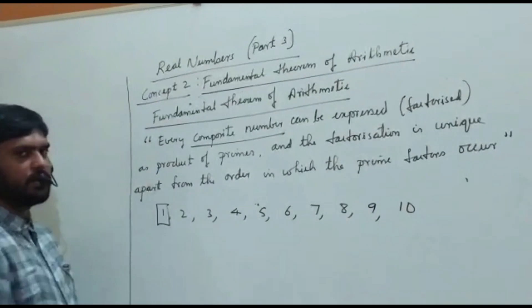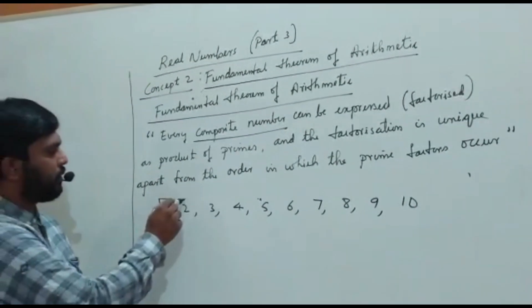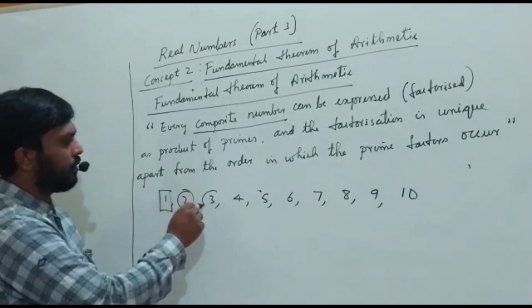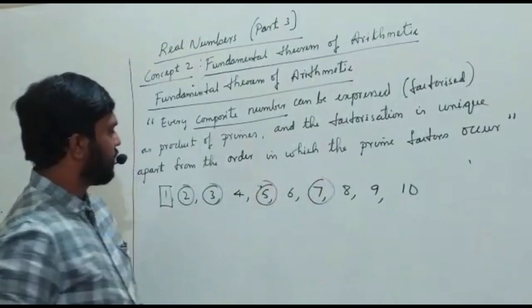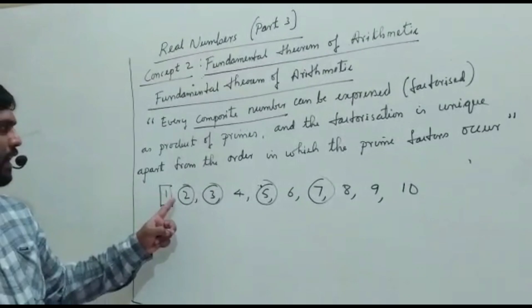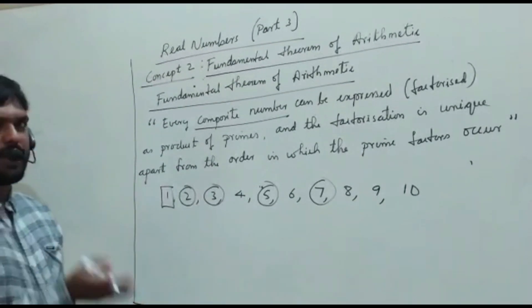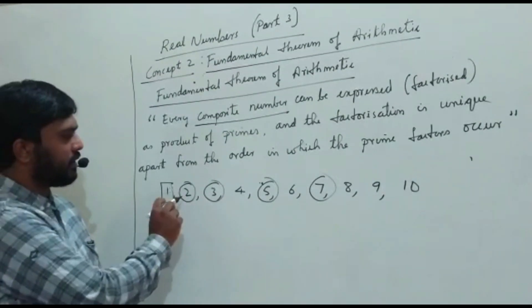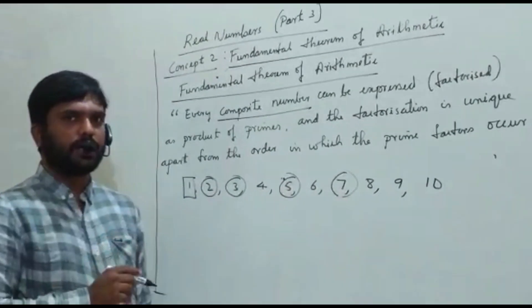This one is neither prime nor composite. 2, 3, 5, 7 - these numbers don't have factors other than the number itself and 1. So these numbers 2, 3, 5, 7 are called prime numbers.